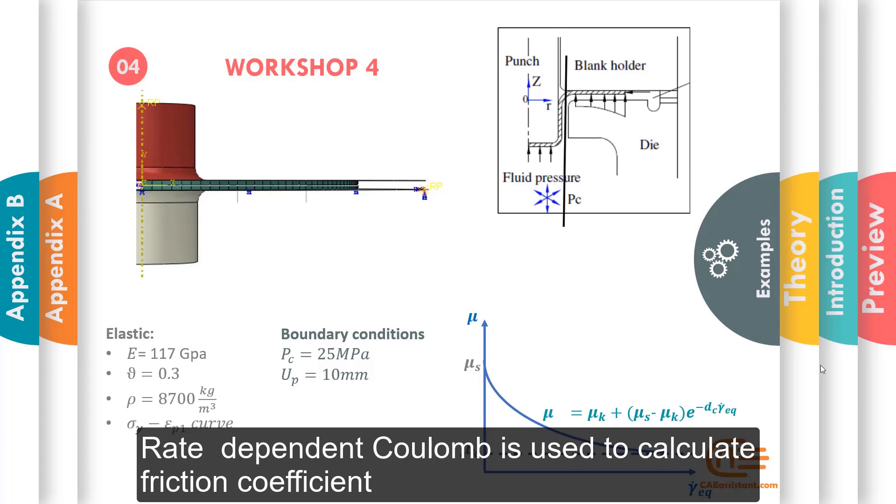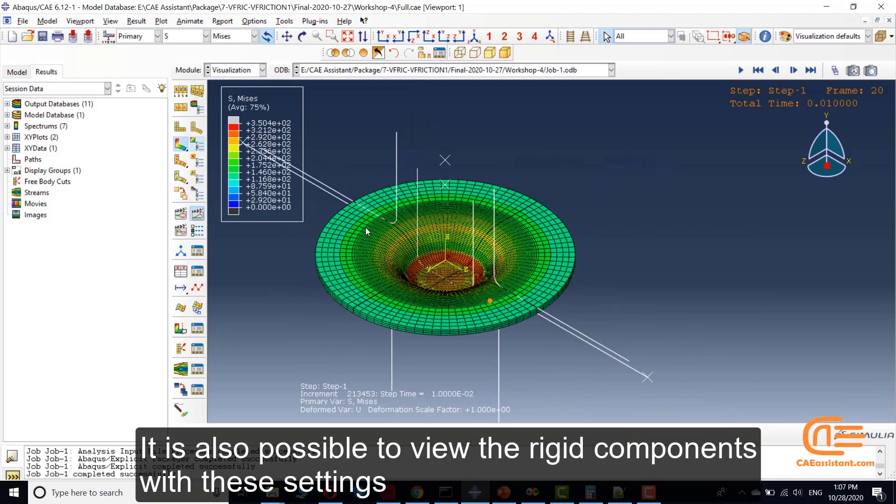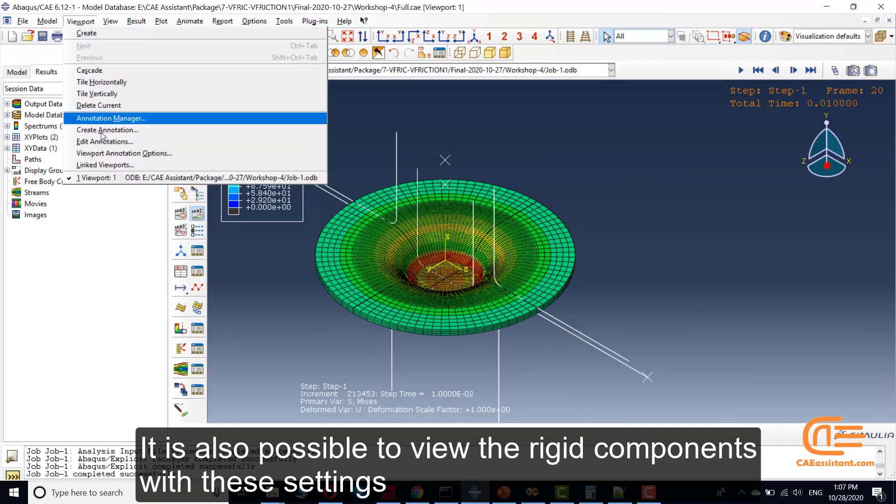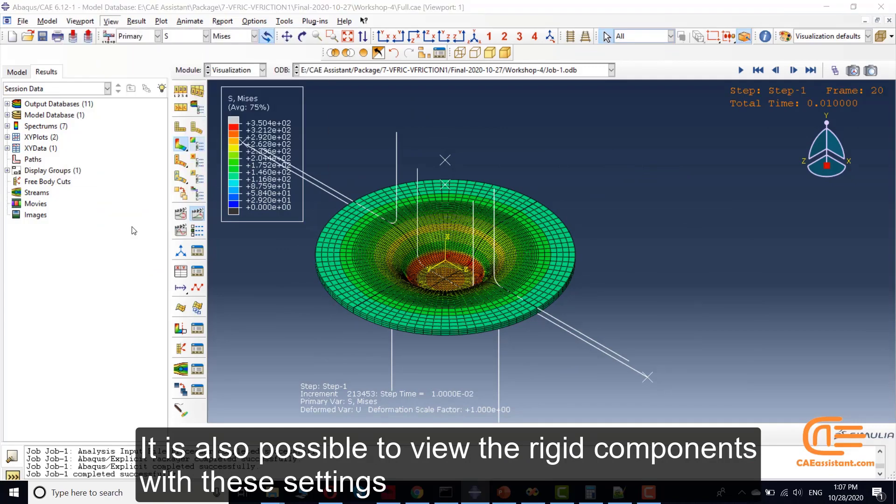Rate-dependent Coulomb is used. It is also possible to view the rigid components with these settings.